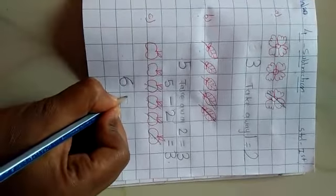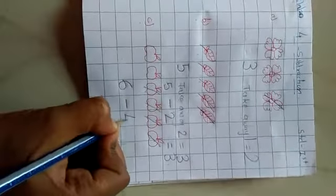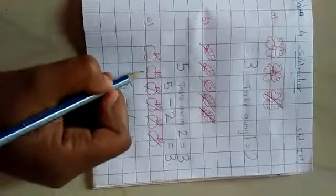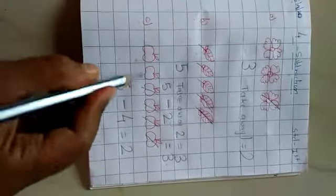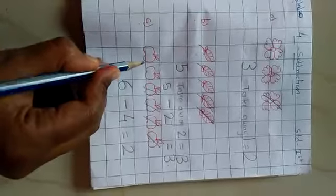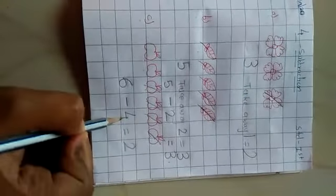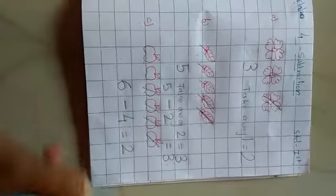So, I will write here minus sign. 4 is equal to how many left? 1, 2. Means I have total 6 apples. Take away 4 apples and 2 left with me.